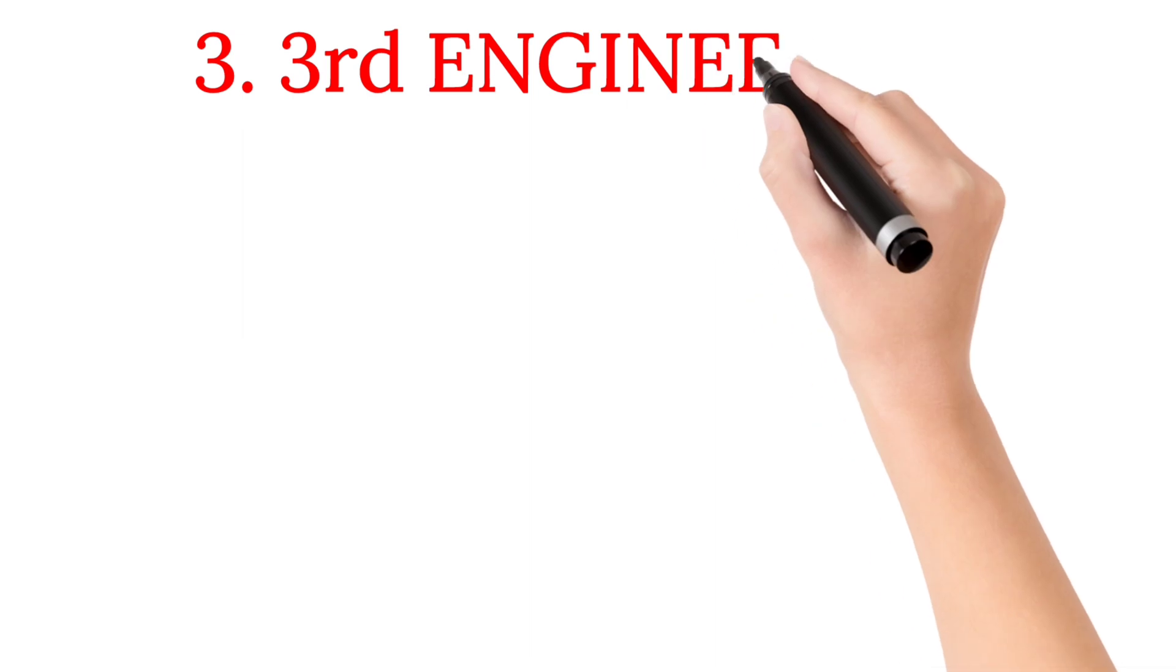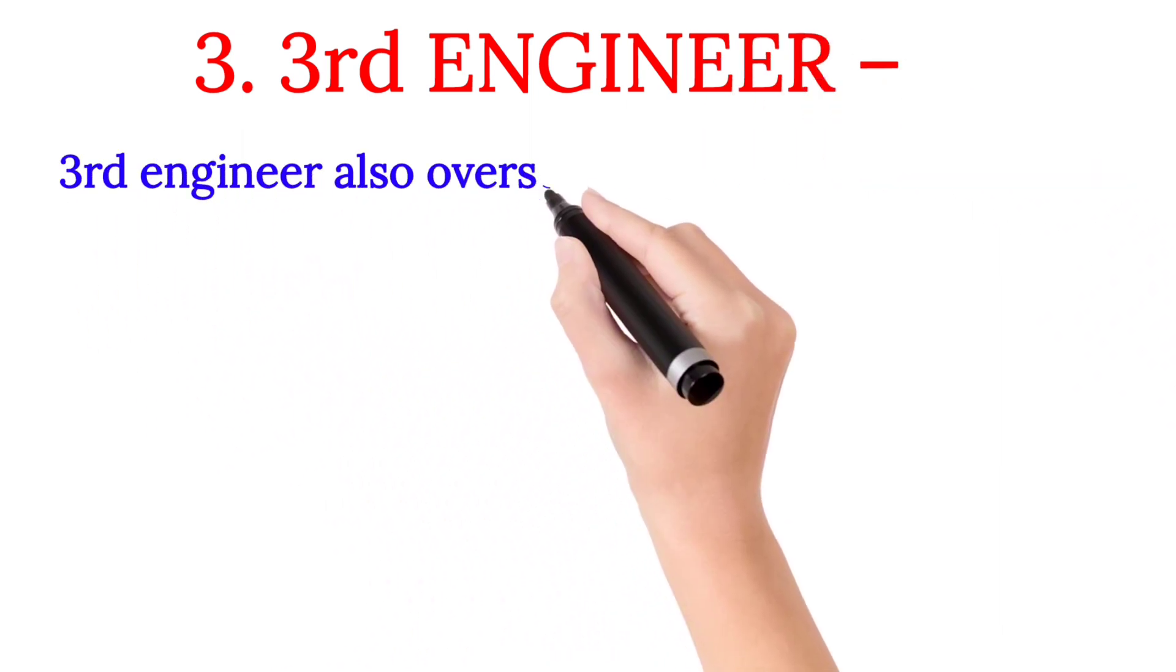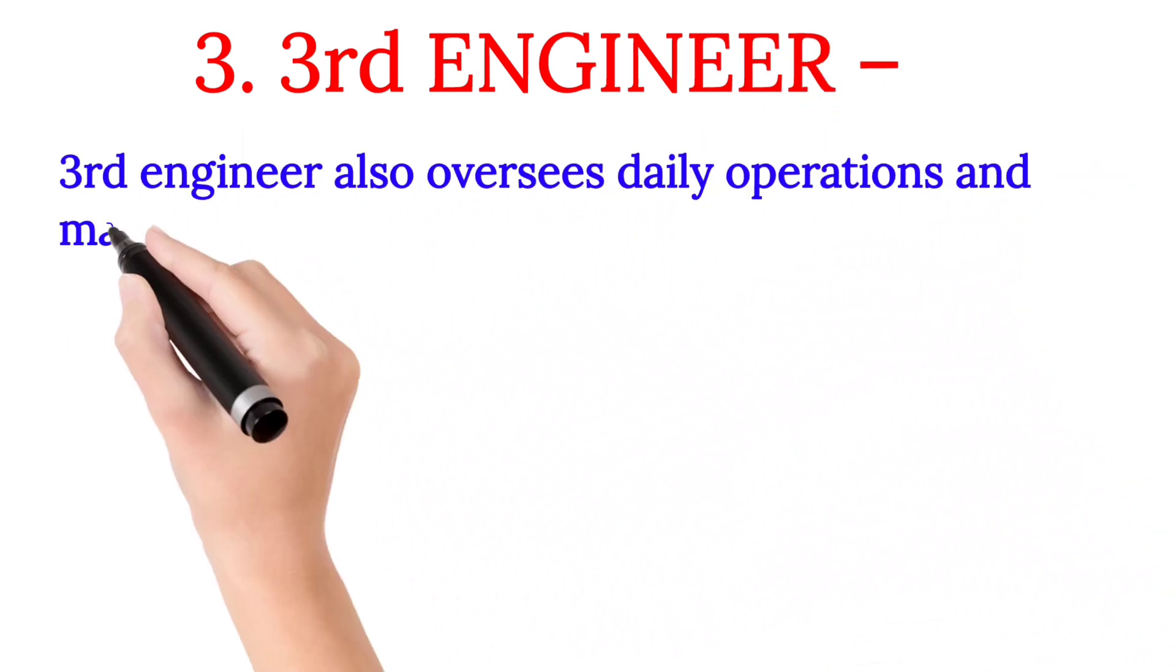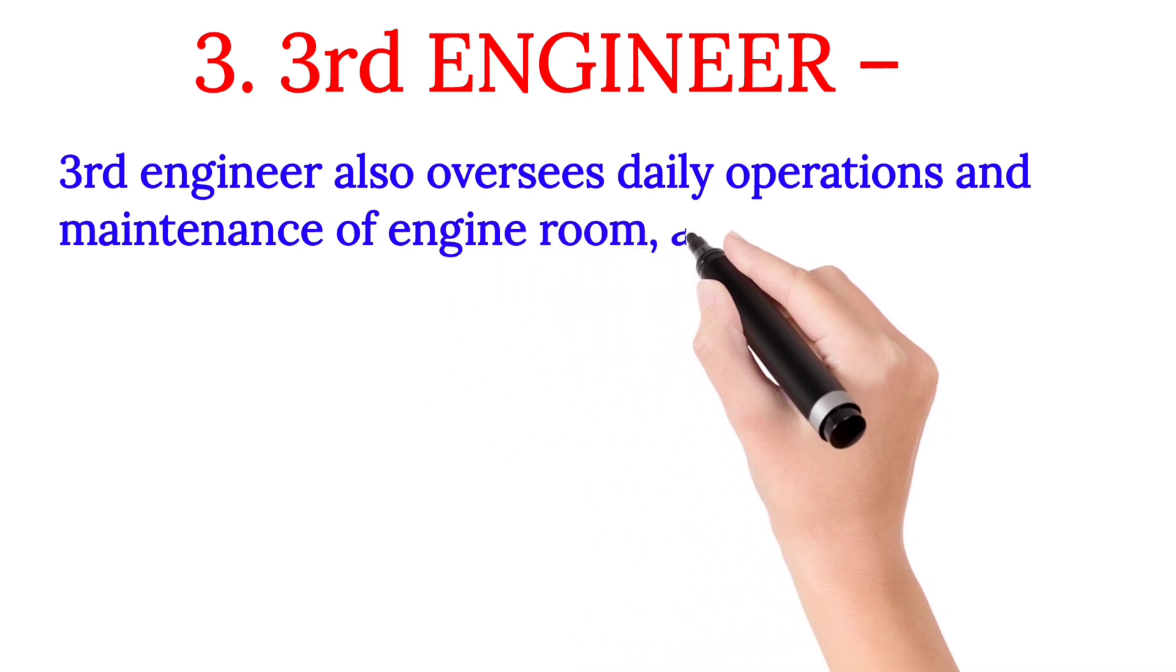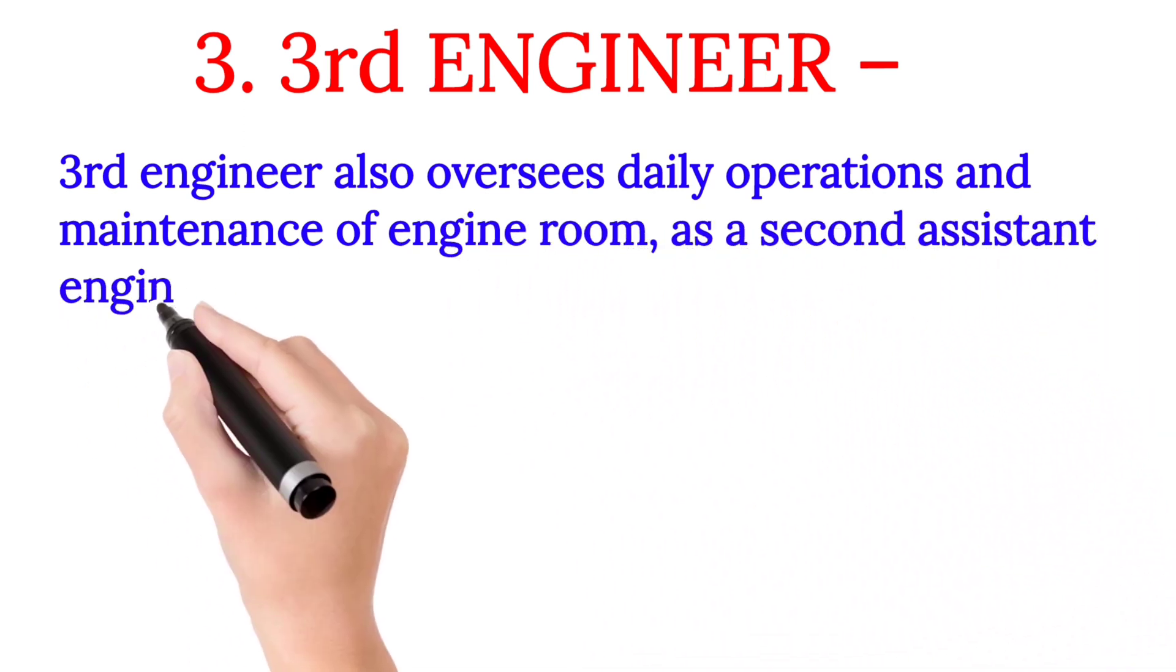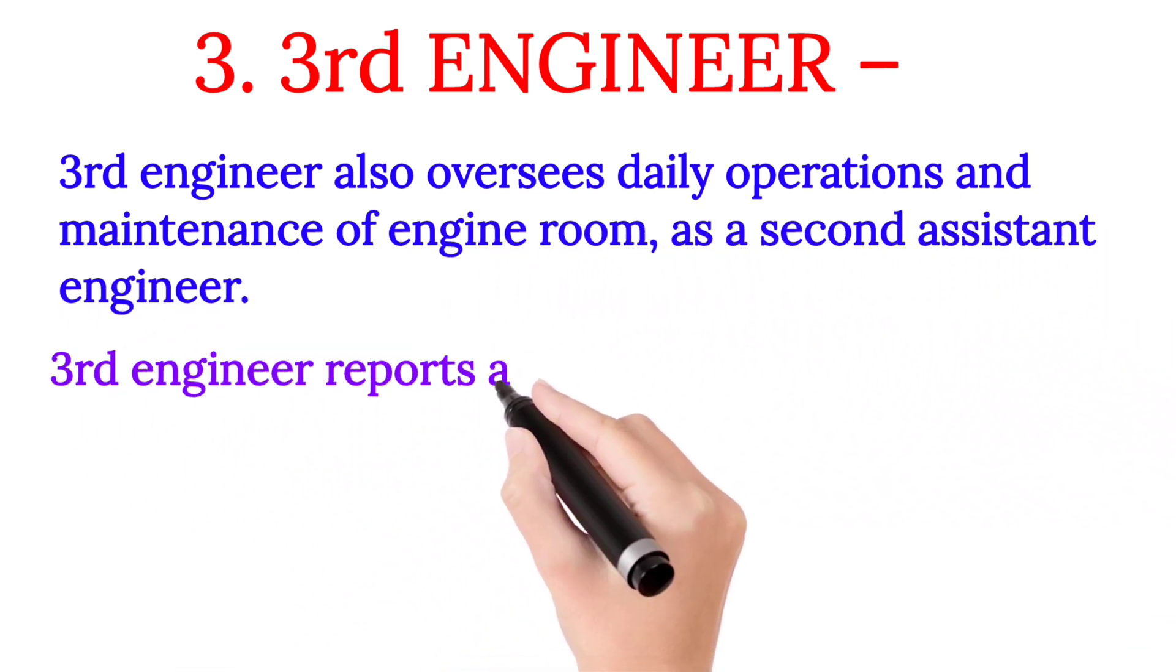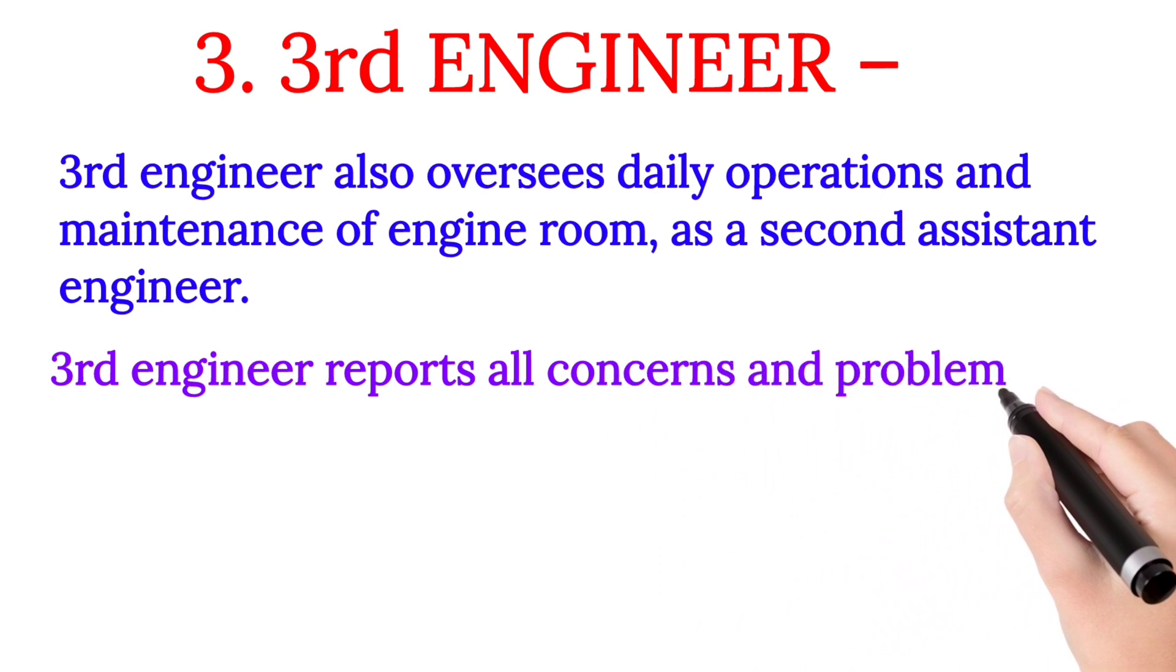Number three: Third Engineer. The Third Engineer also oversees daily operations and maintenance of the engine room as a Second Assistant Engineer. The Third Engineer reports all concerns and problems to the Second Engineer.